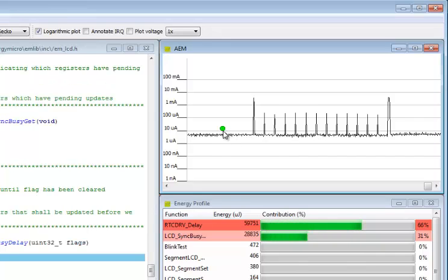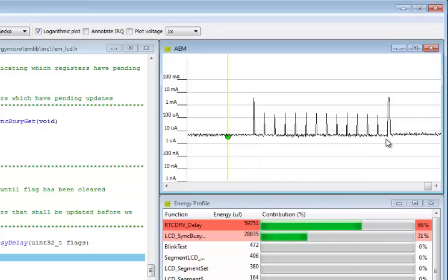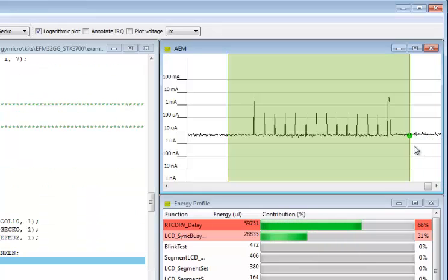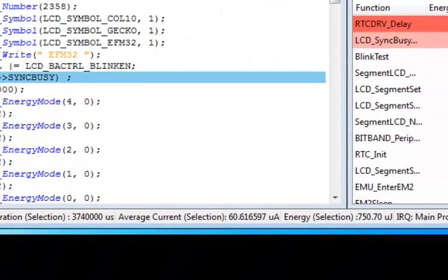To select a region, we first have to left-click to select a point and then right-click to set a marker at that point. We do the same thing for a second point and we have selected our region. The average current consumption for that region can be read at the bottom of the program.